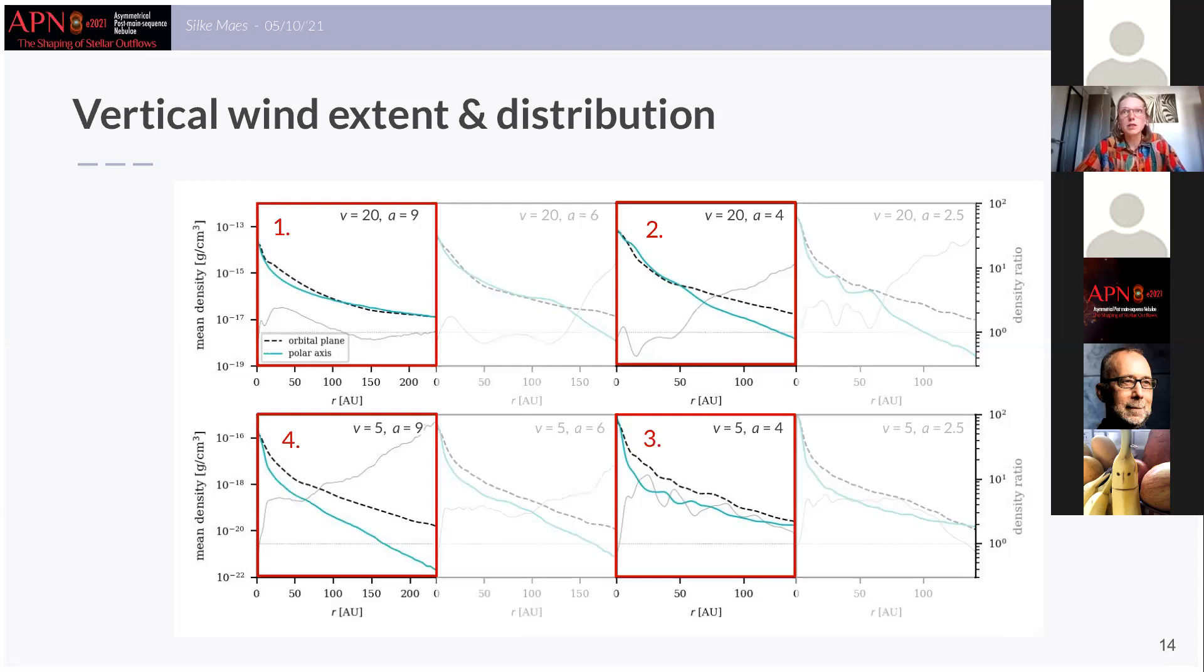In comparison we have model three and here the mean density along the polar axis is much lower than in the orbital plane. However there is no void present near the poles since the gray curve is generally decreasing and not increasing.